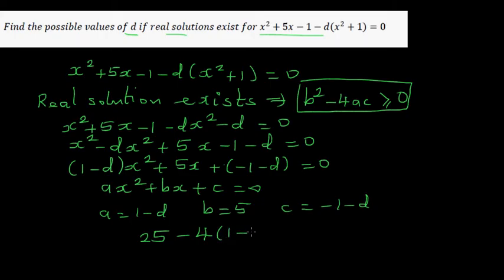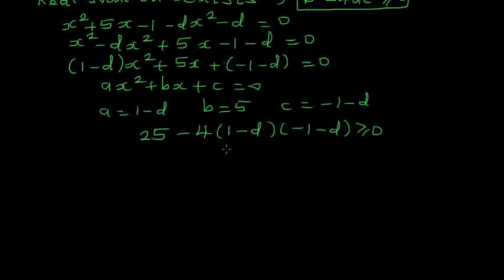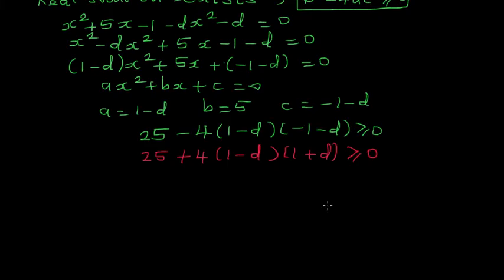So b squared is 25, minus 4 times a which is 1 minus d, times c which is minus 1 minus d, is greater than or equal to 0. Factoring out minus 1 from minus 1 minus d, the minus 4 becomes plus 4, giving 25 plus 4 times 1 minus d times 1 plus d, greater than or equal to 0.